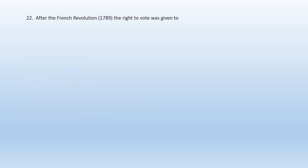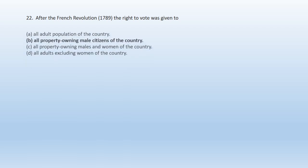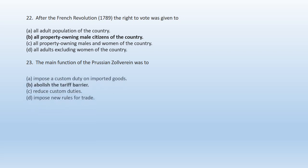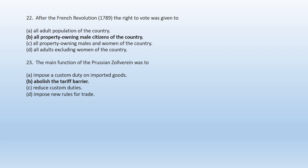Question 22: After the French Revolution, the right to vote was given to: A. All adult population of the country, B. All property-owning male citizens of the country, C. All property-owning males and women of the country, D. All adults excluding women of the country. Option B — all property-owning male citizens of the country were given the right to vote after the French Revolution. Question 23: The main function of the Prussian Zollverein was to: A. Impose a customs duty on imported goods, B. Abolish the tariff barrier, C. Reduce custom duties, D. Impose new rules for trade. B. Abolish the tariff barrier is the right answer — the main function of the Prussian Zollverein.